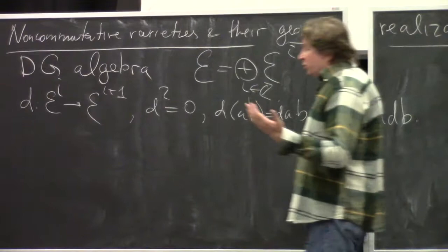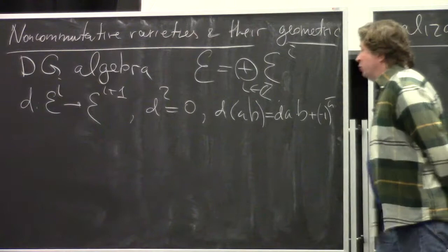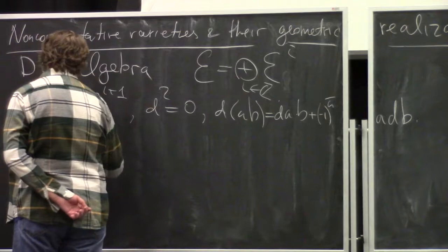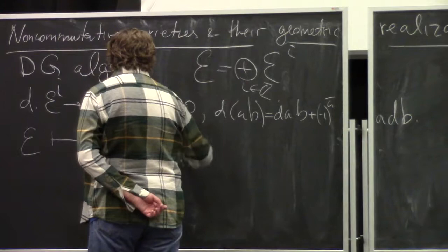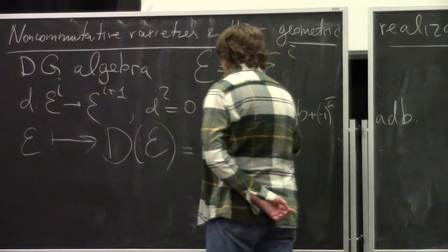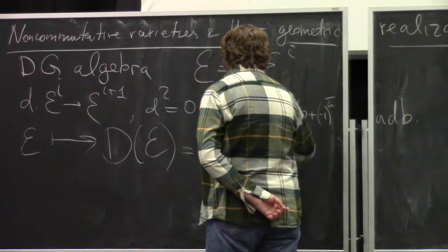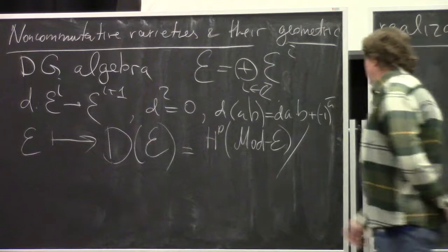This is some kind of generalization of the usual notion of algebra. To any differential graded algebra E, we can associate the derived category of modules over it. In homological algebra, we consider the homotopy category of all differential graded modules over this DG algebra and factorize by the subcategory of acyclic DG modules.